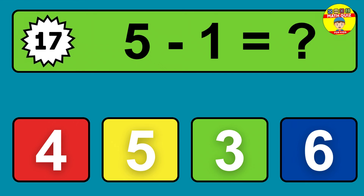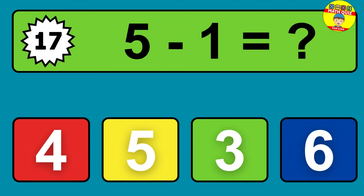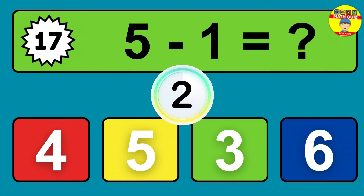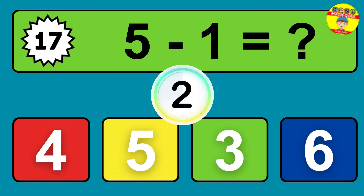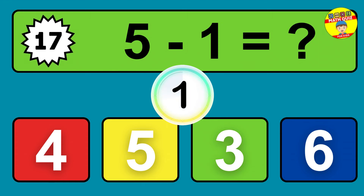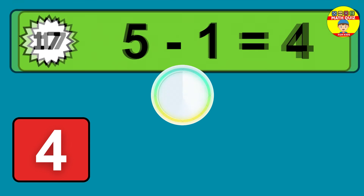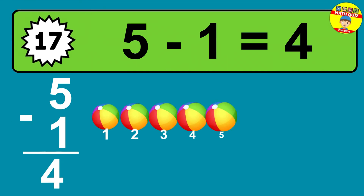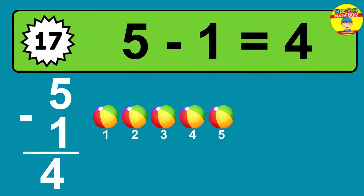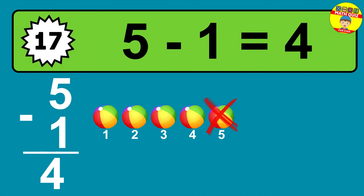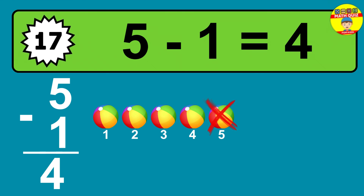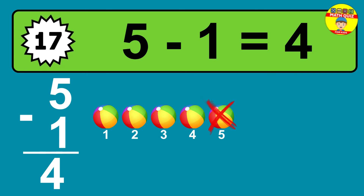Question seventeen: five minus one equals what? The answer is five minus one is four. Let's count it: one, two, three, four.